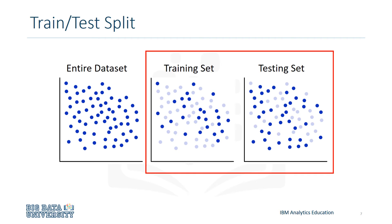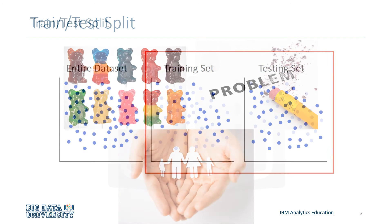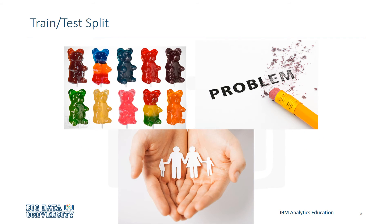However, please ensure that you train your model with the testing set afterwards, as you don't want to lose potentially valuable data. The issue with Train-Test-Split is that it's highly dependent on which datasets are trained and tested on it. This causes Train-Test-Split to have a better out-of-sample prediction than training and testing on the same dataset, but it still has some problems due to this dependency. Another evaluation model, called K-Fold Cross-Validation, resolves most of these issues.